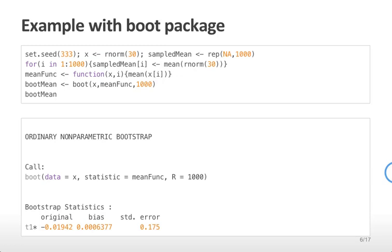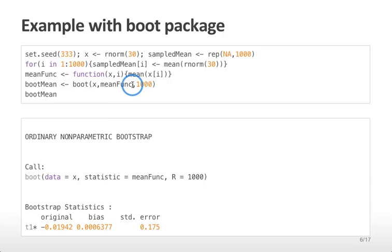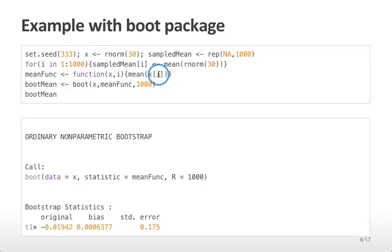The boot function takes three pieces of information: the original data x, the function that we're going to calculate in each subsample, and the number of times we should recalculate that function. The function calculated in the subsample should have two arguments: the data x, and i, a set of indices. In each case you'll get a different random set of indices to be applied, and what we'd like to do is take the mean of the x values corresponding to those indices. If you look at the variable boot mean, it gives you the original calculation of the statistic, an estimate of its standard error, and an estimate of its bias.